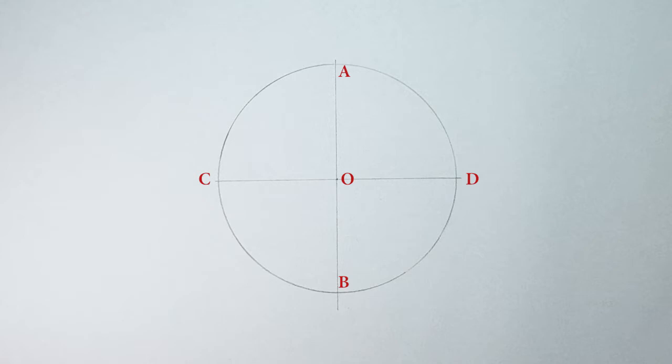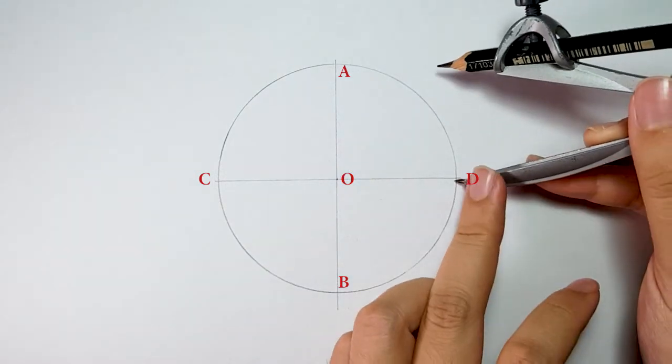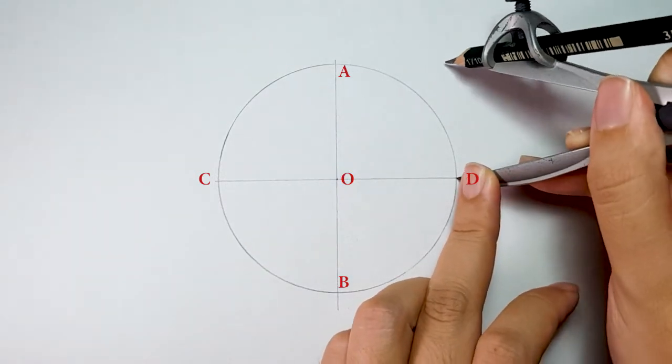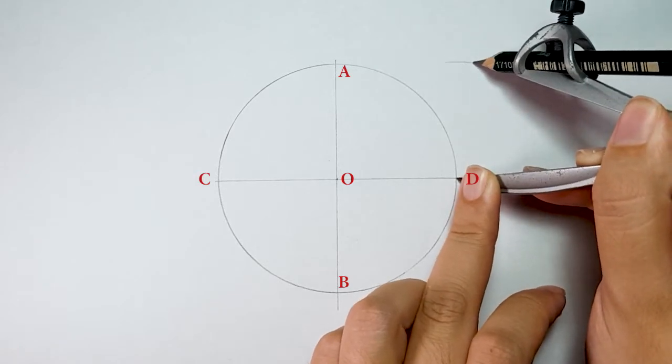Now, we are going to bisect 90 degrees into half, so 45 degrees on each side. Adjust your compass and place on point D to draw marks on top and below side.